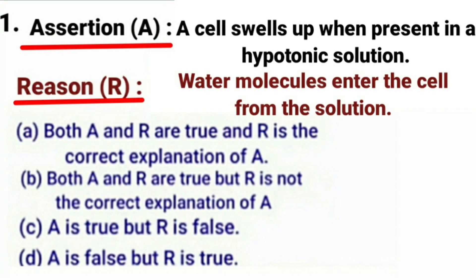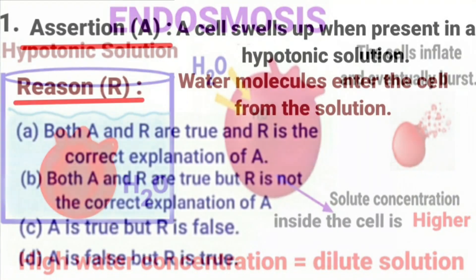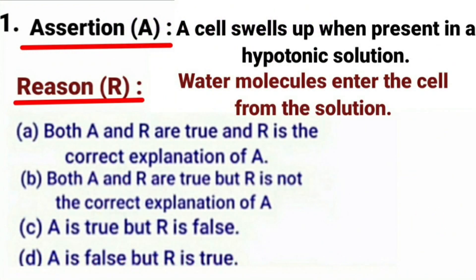First question. Assertion: A cell swells up when present in a hypotonic solution. Reason: Water molecules enter the cell from the solution. The first step is to find whether both statements are true or false. A cell swells up when present in a hypotonic solution — this is true, because the hypotonic solution surrounding the cell has a higher water concentration than the cell, meaning the outside solution is very dilute. The cell will gain water by endosmosis and swell up. Water concentration is more in the hypotonic solution, so the first statement is true.